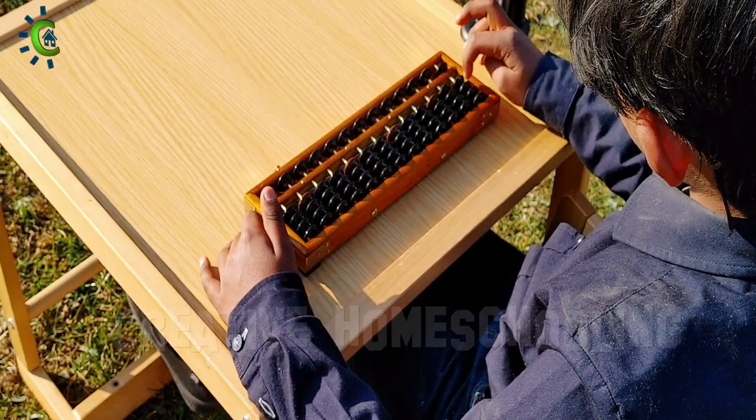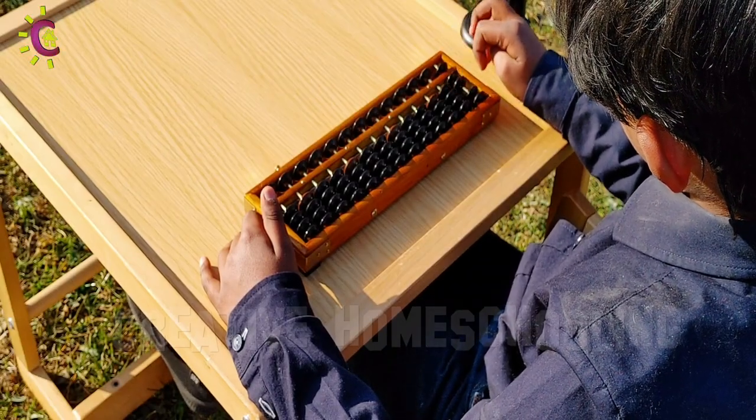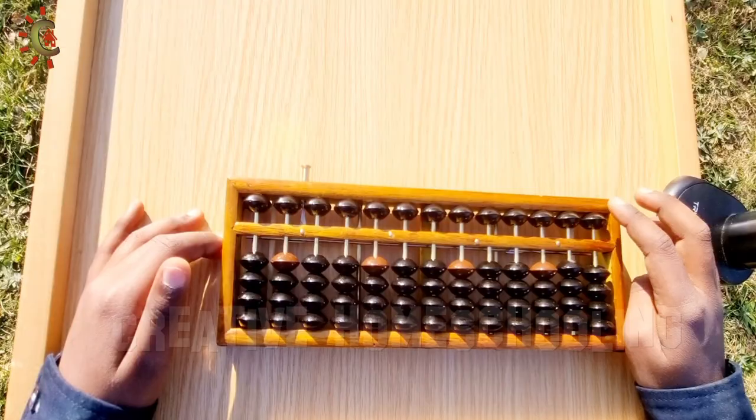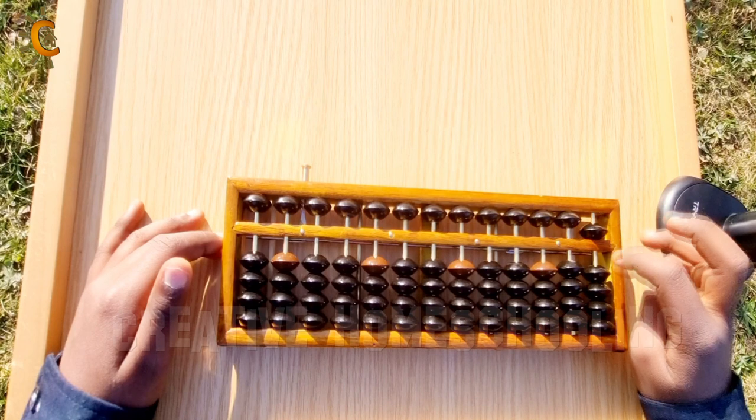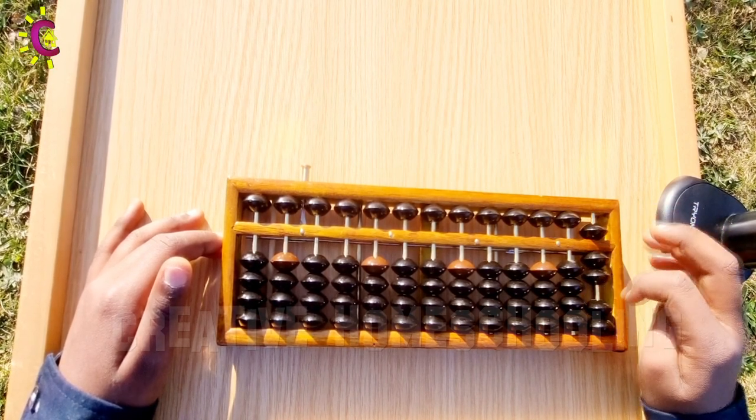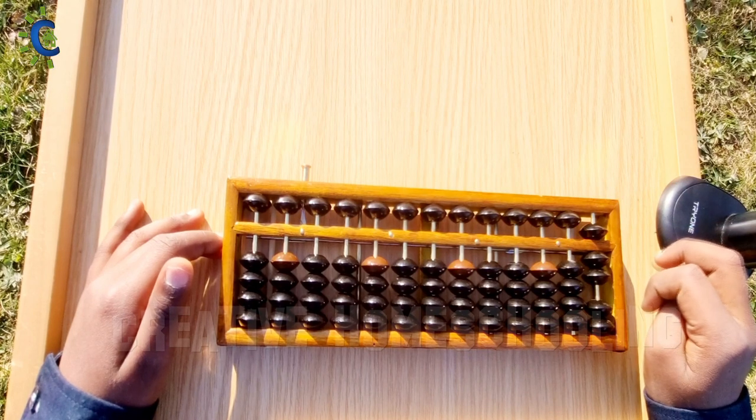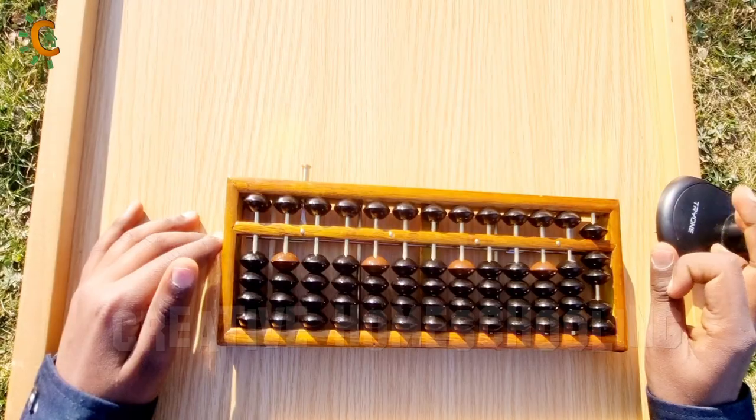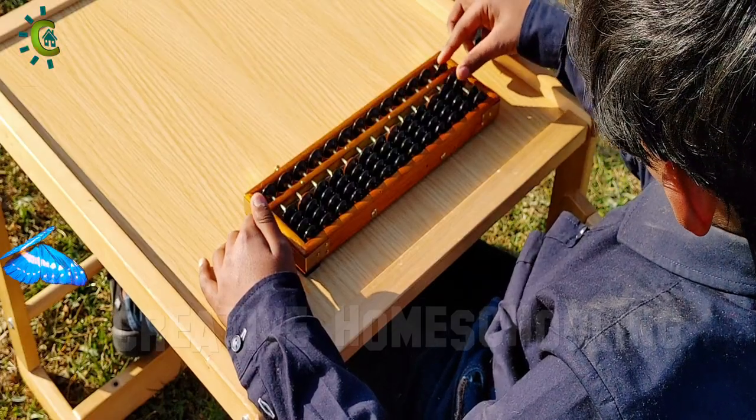For instance, to set number seven on the abacus with only the index finger requires two successive motions. First move down a five unit bead and then move up two one unit beads. Whereas, these motions can be performed simultaneously with two fingers using the butterfly movement.